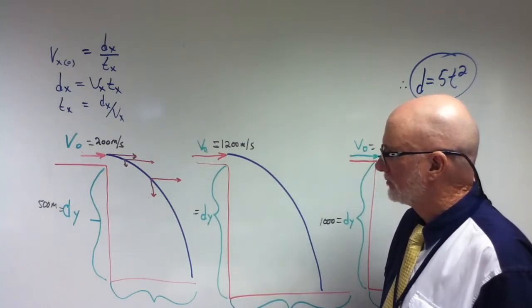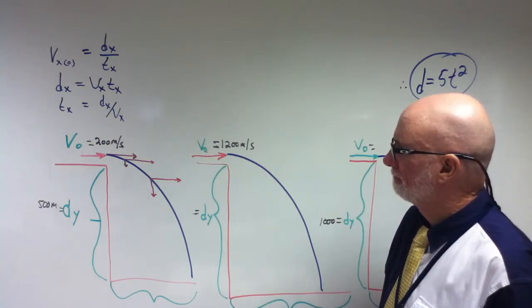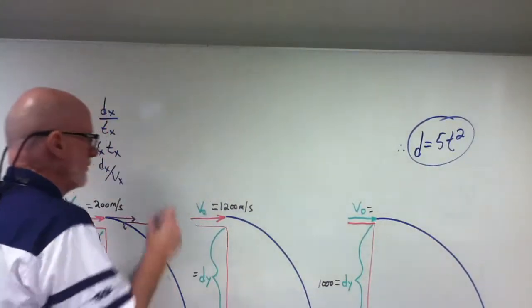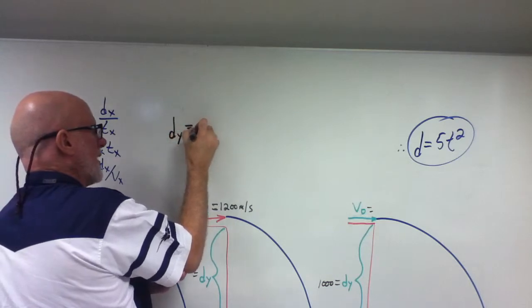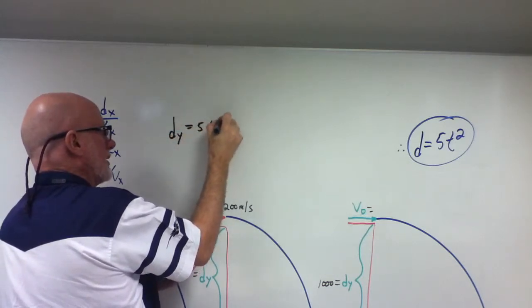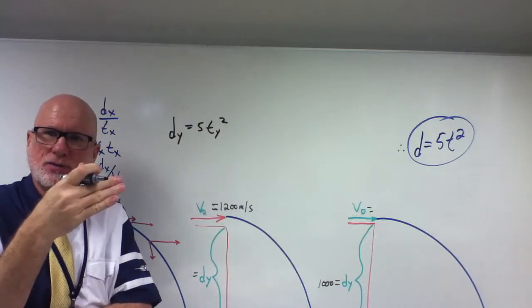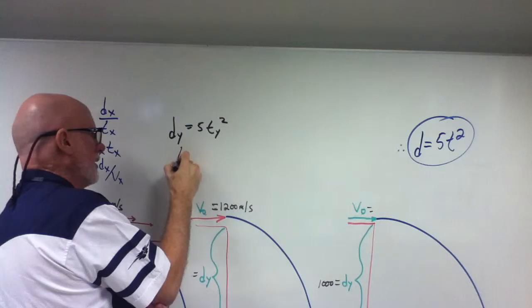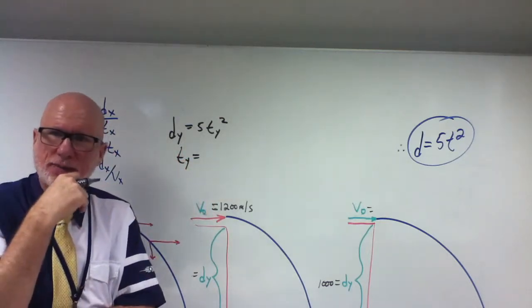Now, what we did was we have this equation for distance. We'll call that dy equals 5ty squared, right? Because it's the time in the vertical direction, correct? So how do you solve for dy? What would dy be?